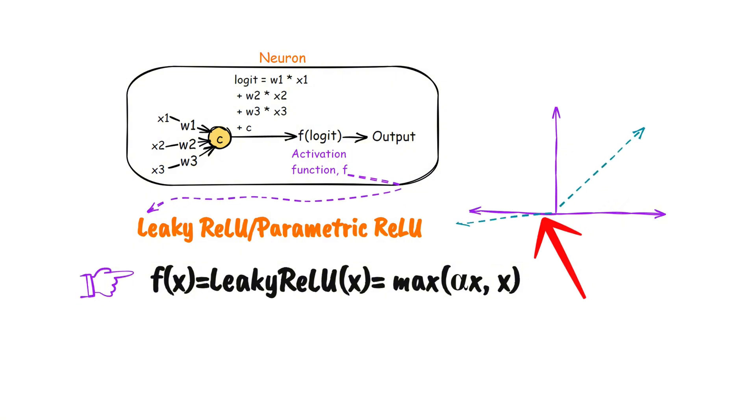It introduces a small negative slope for negative values, preventing neurons from dying by keeping them active, even for negative inputs.